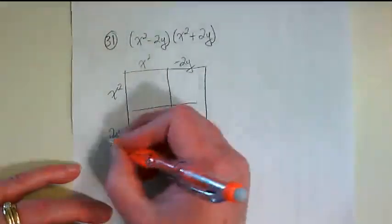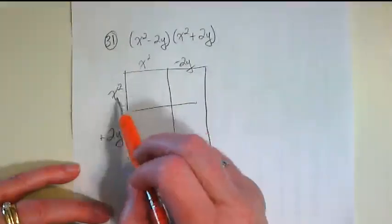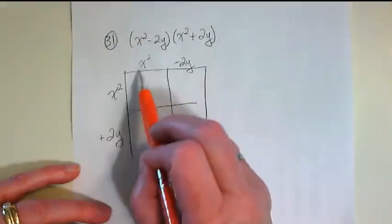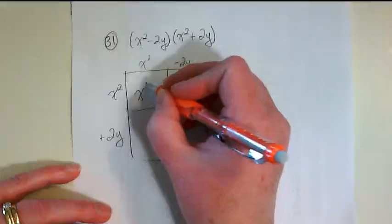It doesn't really matter which one you do which way. Okay, so when I multiply these two, x squared times x squared, I get x to the fourth power,